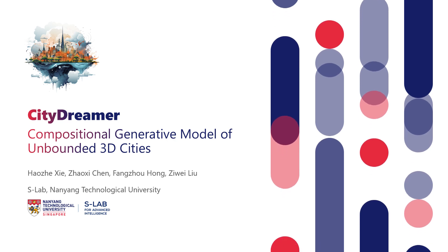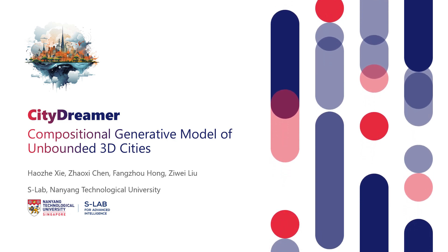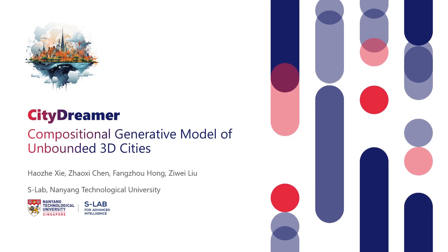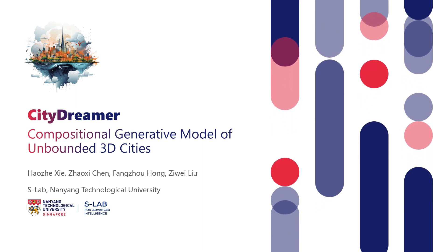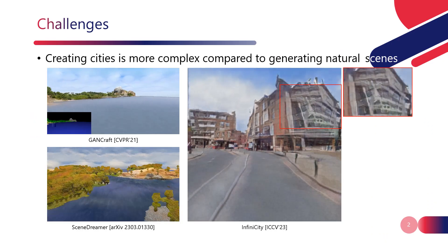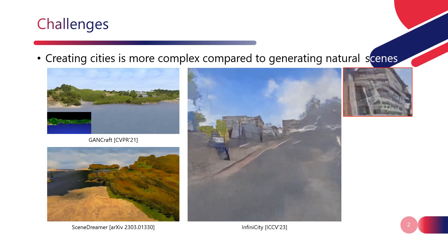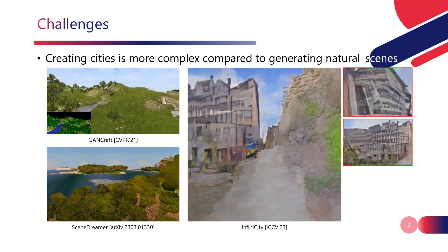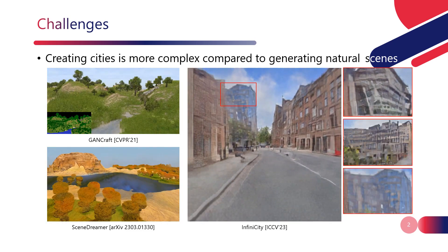In this paper, we propose a generative model named CityDreamer to generate unbounded 3D cities. Compared to generating natural scenes, creating cities is more intricate due to humans' heightened sensitivity to structural distortions.